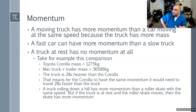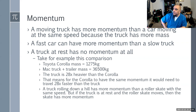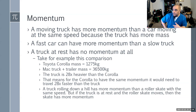Comparing a Toyota Corolla with mass of about 1,275 kilograms versus a fully loaded Mack truck at about 36,000 kilograms — the truck is about 28 times heavier. For the Corolla to have the same momentum as that truck, it would have to travel 28 times faster. A truck rolling down a hill has more momentum than a roller skate at the same speed. But if the truck is at rest and the roller skate is moving, the roller skate has more momentum.